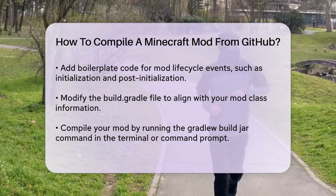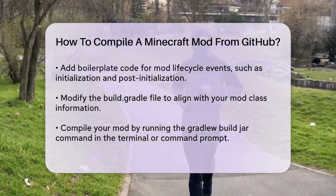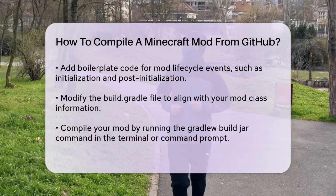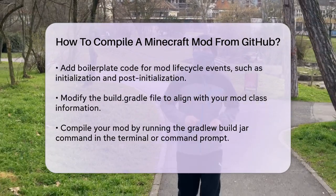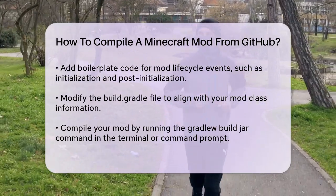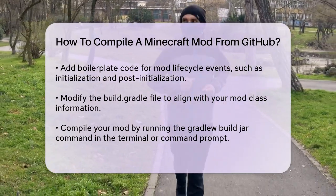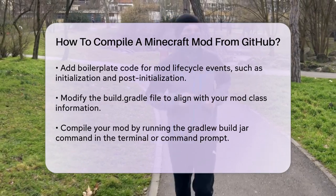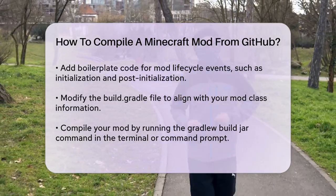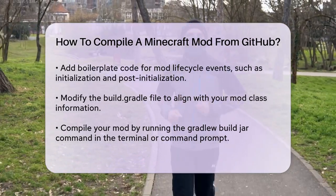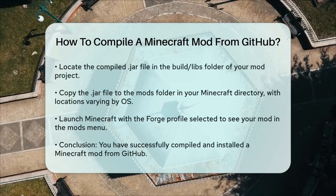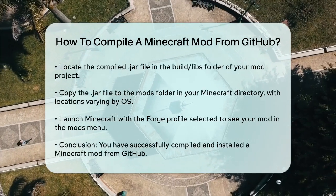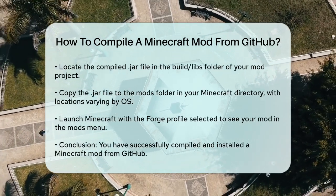Now it's time to build your mod. You'll need to modify the build.gradle file to match the information in your mod class. Then run the Gradle build jar command in your terminal or command prompt to compile your mod into a jar file. The compiled .jar file will be found in the build/libs folder of your mod project. You need to copy this .jar file to the Mods folder in your Minecraft directory.